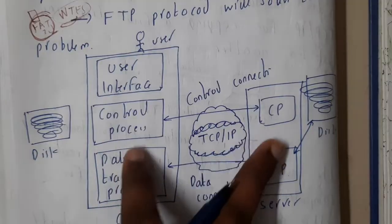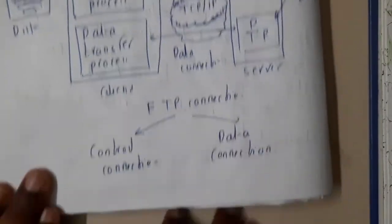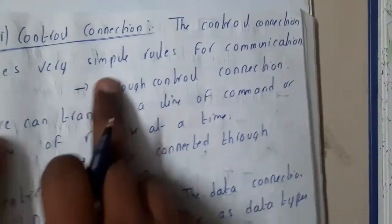These connections are of two types—the two types of connections are control connection and data connection. In control connection, the control connection uses very simple rules for communication.